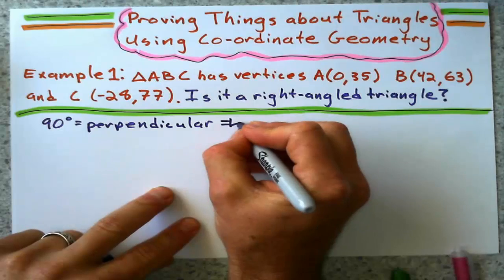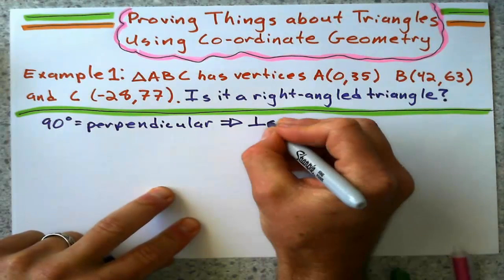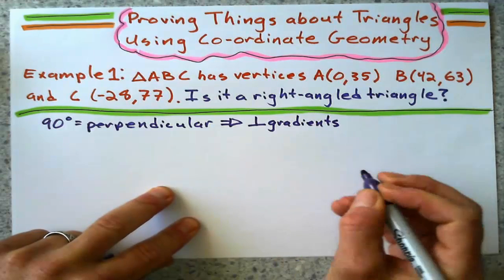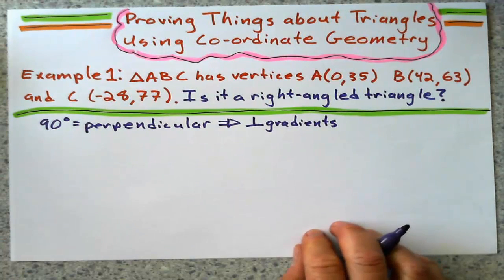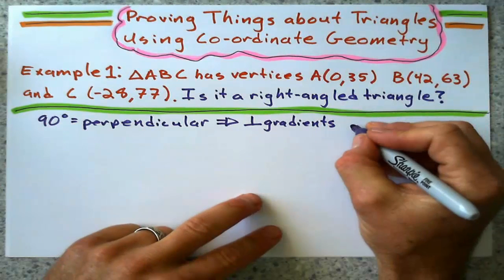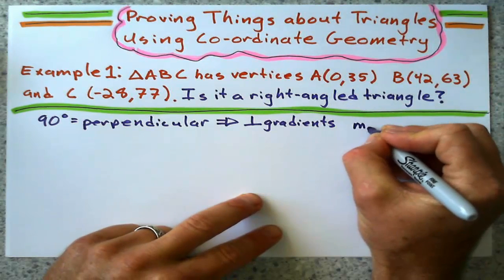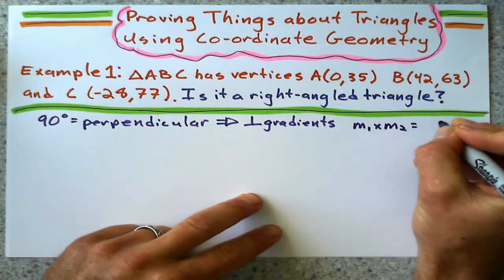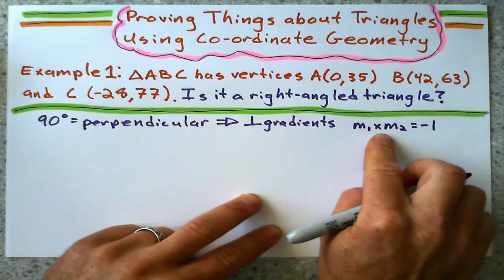Perpendicular gradients. We have learned that if two lines are perpendicular, if their gradients multiply to get negative one.